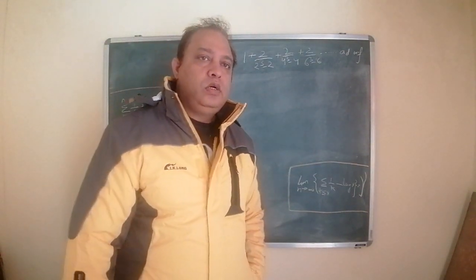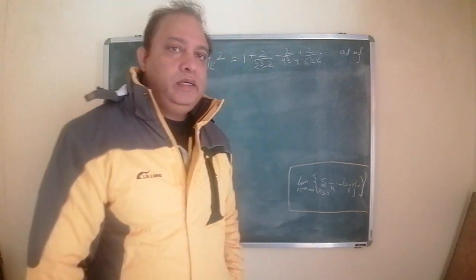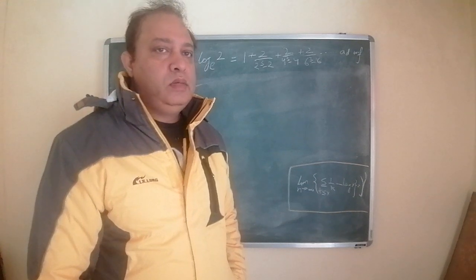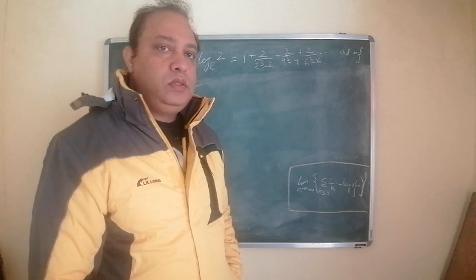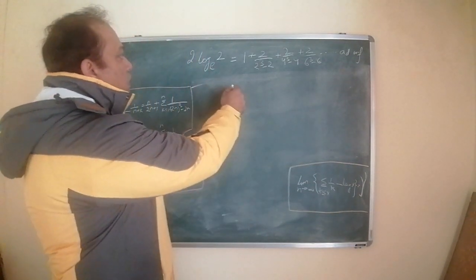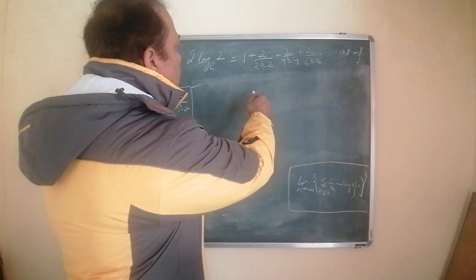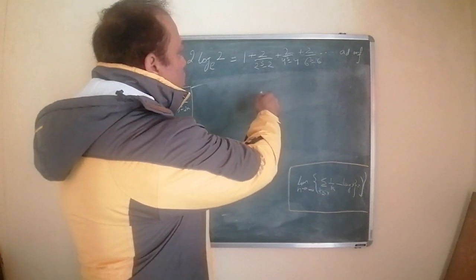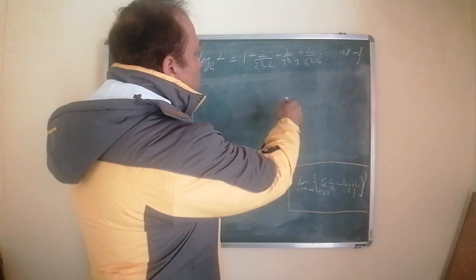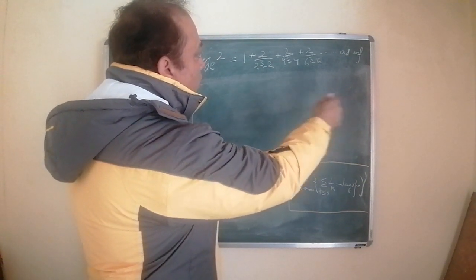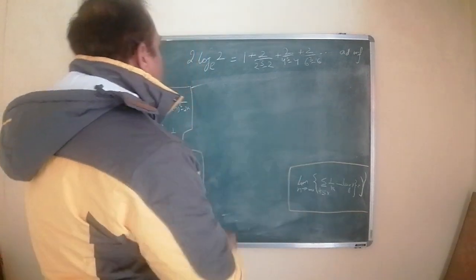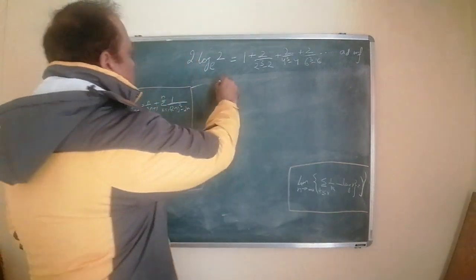Hi friends, I'm going to talk about the second identity that appears in the second chapter of Ramanujan's first notebook. The identity states that natural log of 2 is equal to 1 plus 2 upon 2 cubed minus 2, plus 2 upon 4 cubed minus 4, plus 2 upon 6 cubed minus 6, ad infinitum.